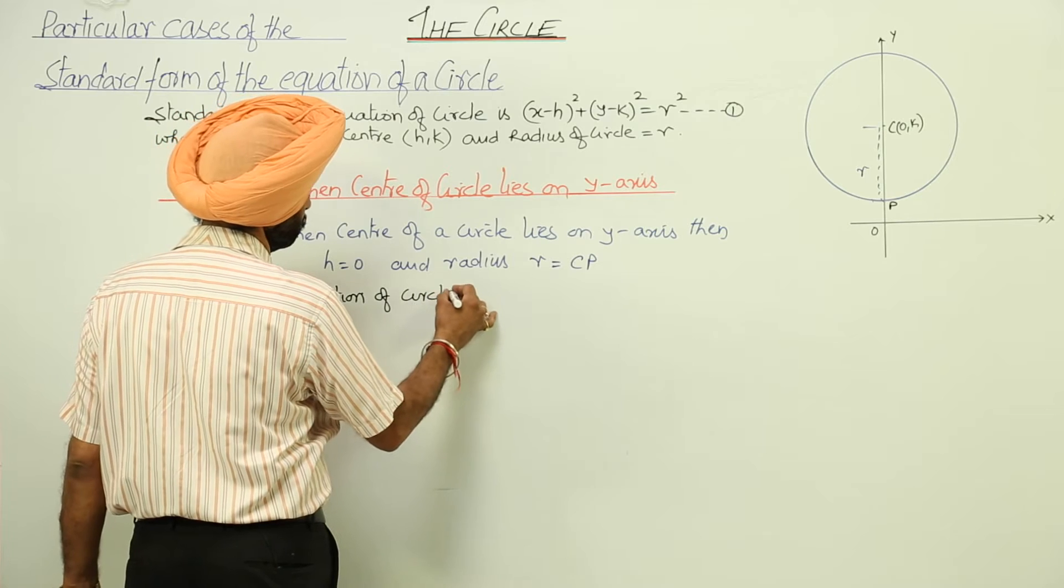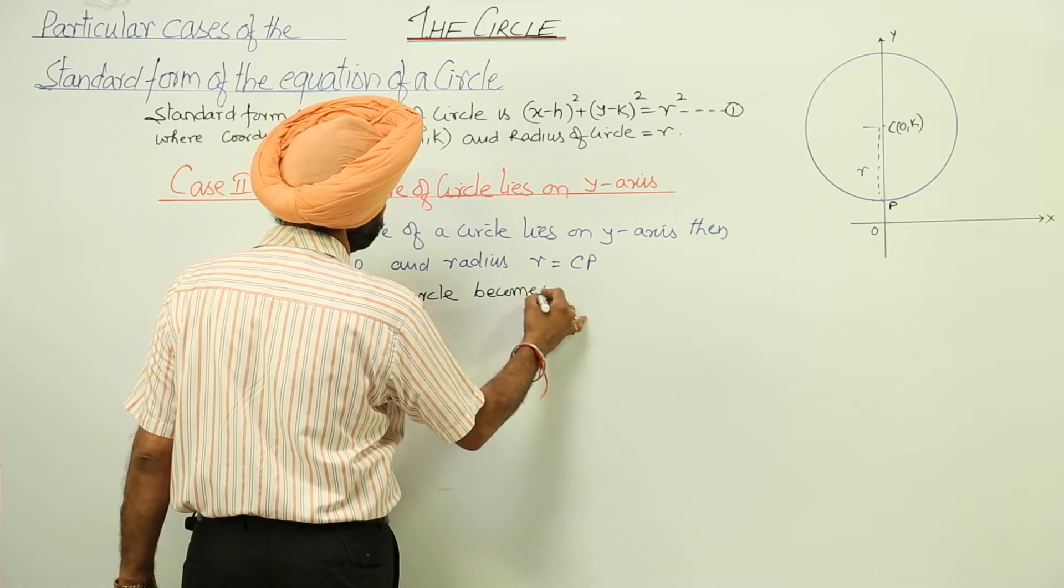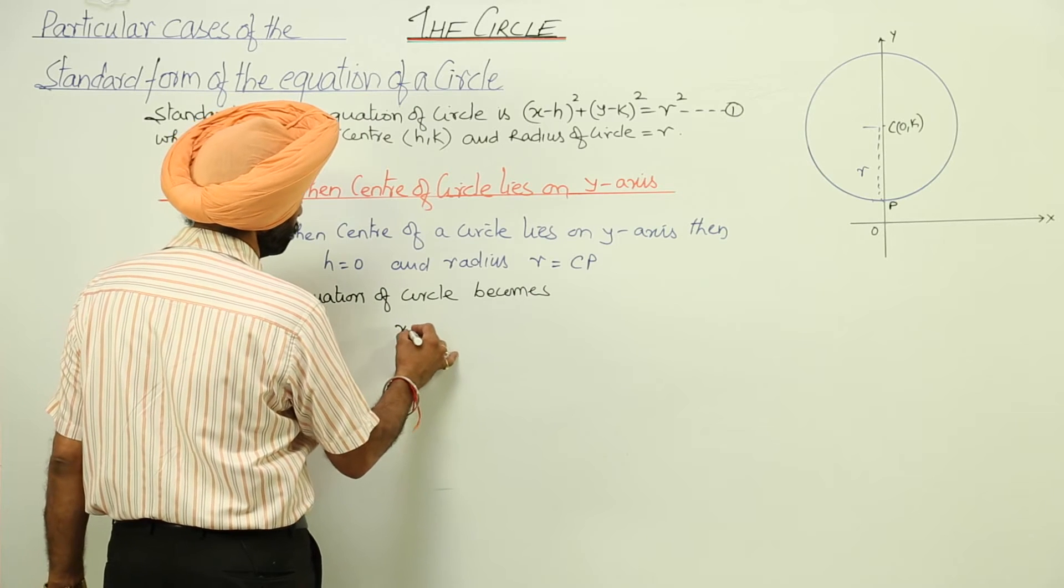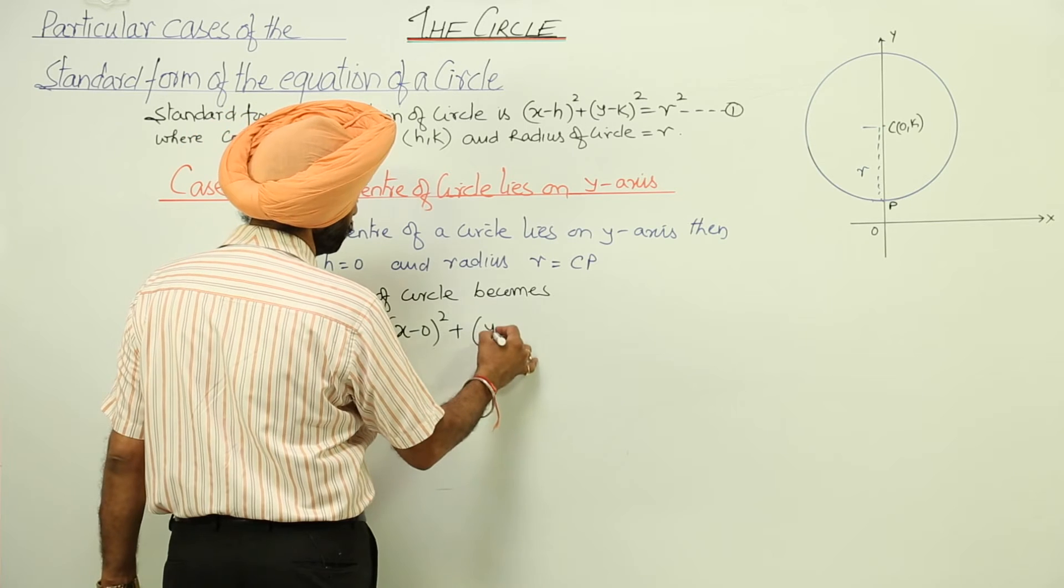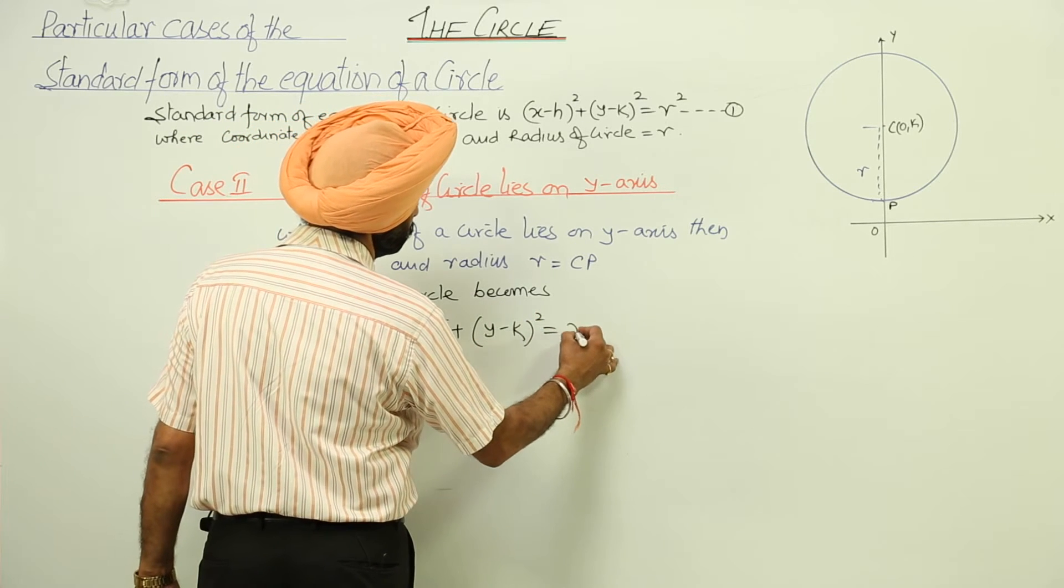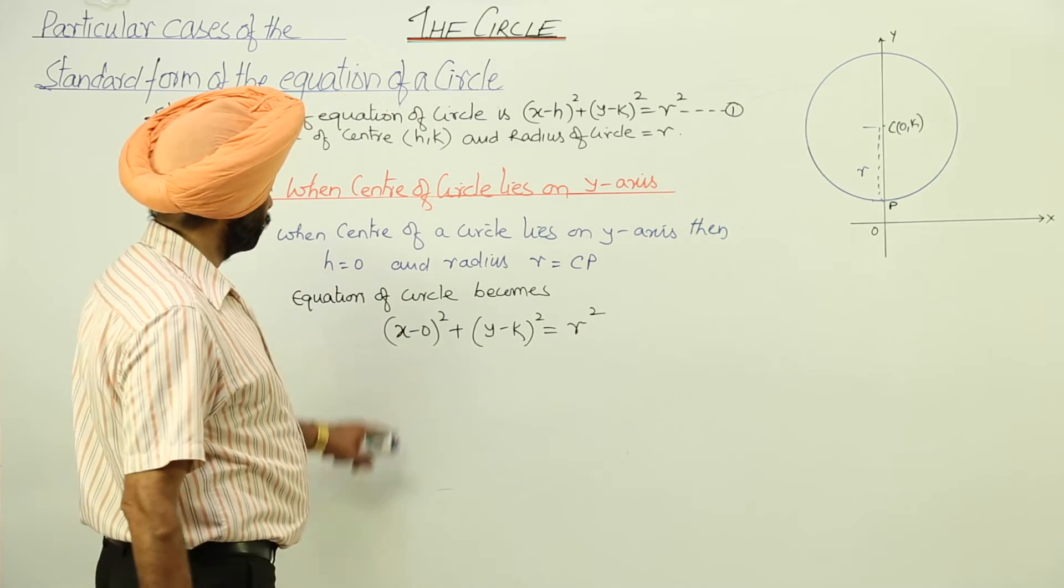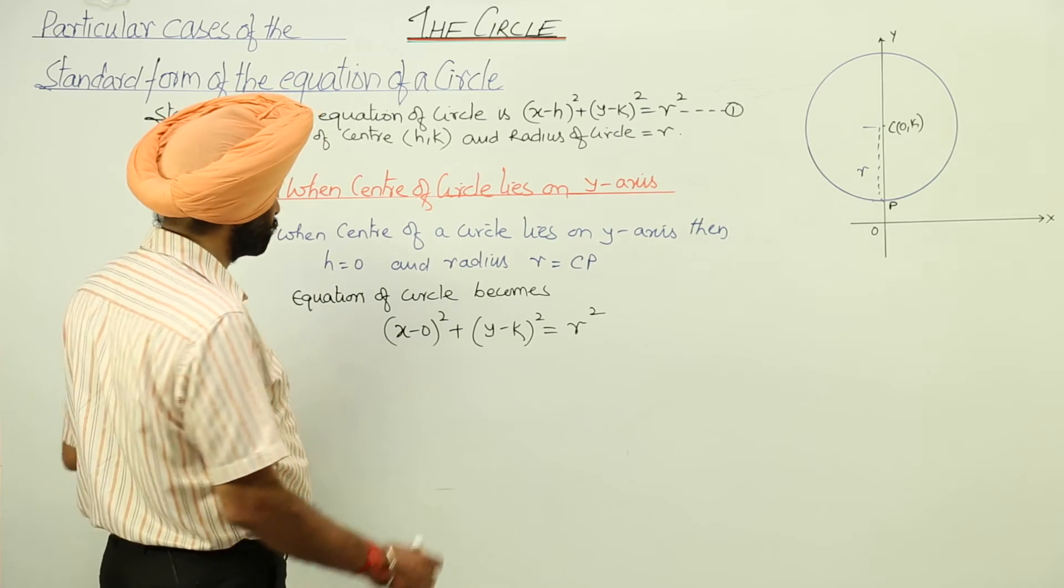The equation of circle becomes (x - 0)² + (y - k)² = r². x minus 0 whole square because h we are having 0.